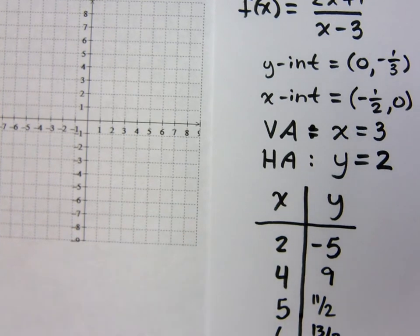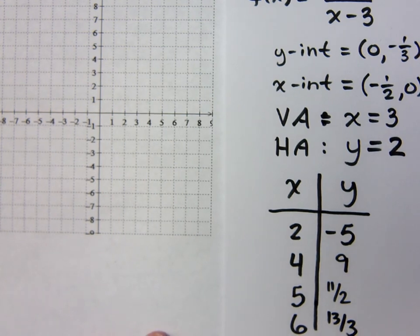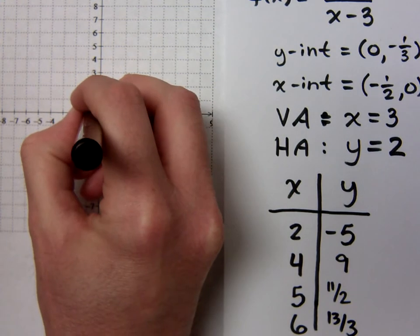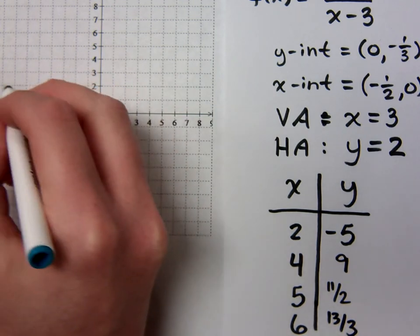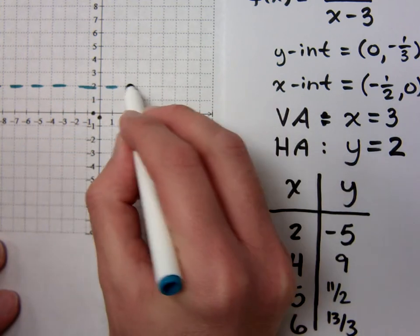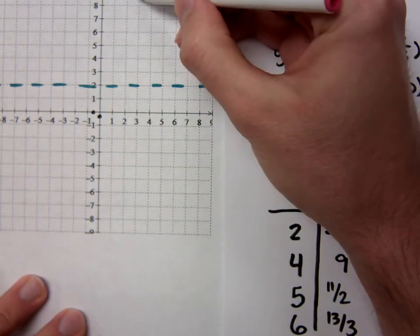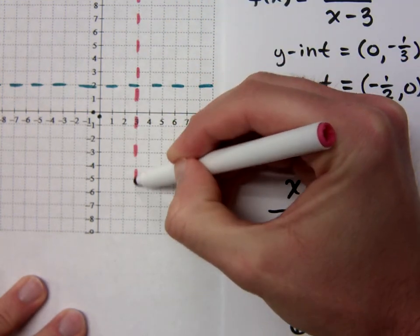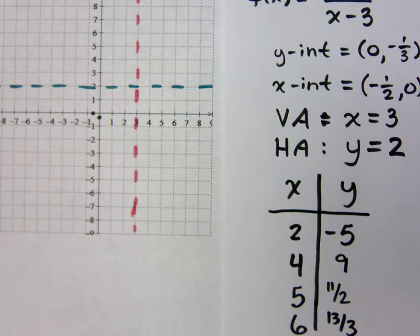All right, so there's some information here that doesn't really help me out too much and that's going to be the x and the y intercept because they're in weird places. I get zero, negative one-third, so that's somewhere right about here. My x-intercept is negative one-half, zero. Is that enough information for my graph? Not even close. So my horizontal asymptote, y equals two. Your vertical asymptote is what? X equals three. Are you allowed to cross that vertical asymptote? No. Well and really for these basic functions we see, we're probably not going to be crossing the horizontal asymptote either.